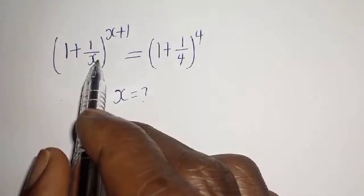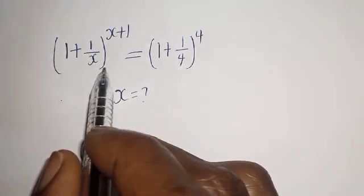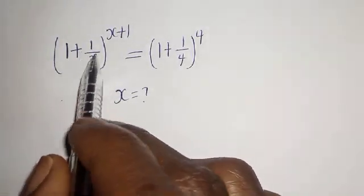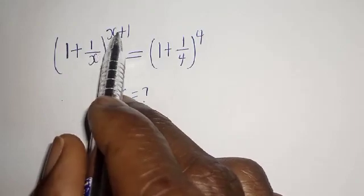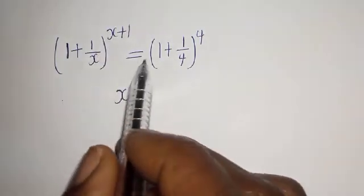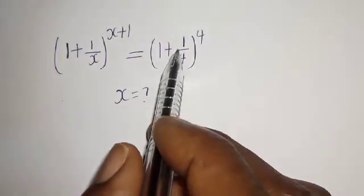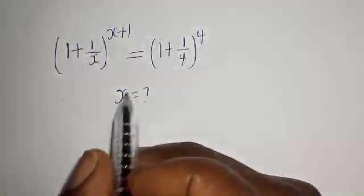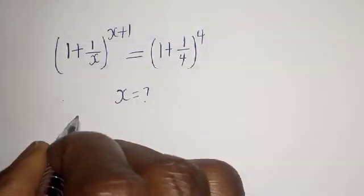Hello. How to solve for s from this equation: 1 plus 1 over s, to the power of s plus 1, is equal to 1 plus 1 over 4 to the power of 4.